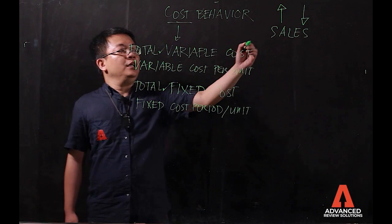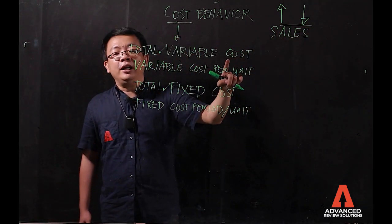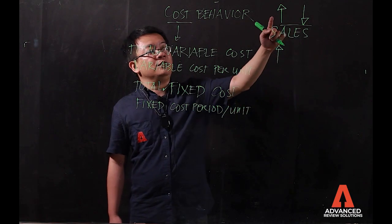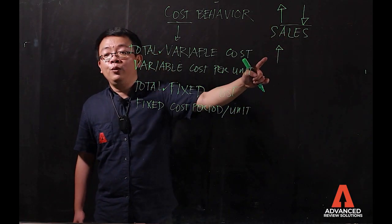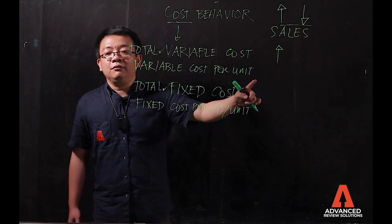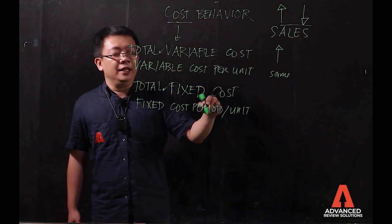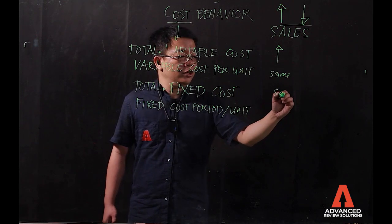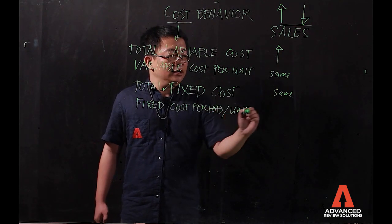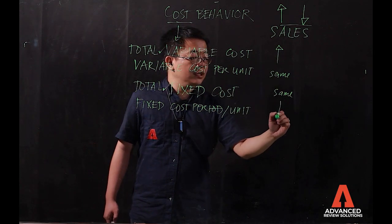What will happen if your sales will go up? What will happen to your total variable cost? Variable cost will also increase. If sales will increase, variable cost total will also increase. How about your variable cost per unit? It is the same. How about fixed cost total? Same. How about your fixed cost per unit? Take note — if sales increase, fixed cost per unit will decrease.